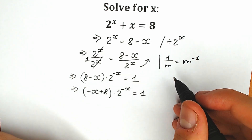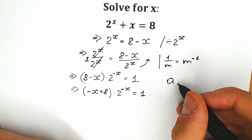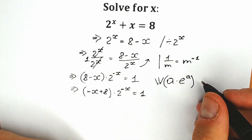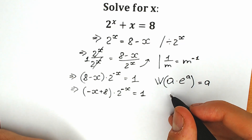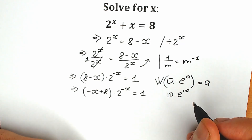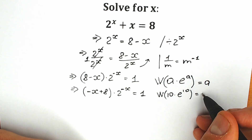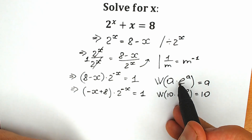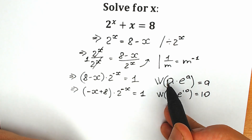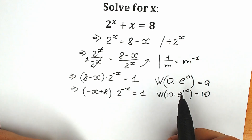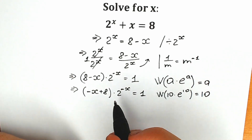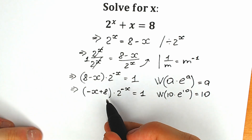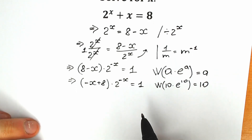We need to know a little about the Lambert W function. Whenever we have an expression of the structure a times e to the power a, when we apply the Lambert W function we get only our a. For example, if we have 10 times e to the power 10 and apply Lambert W, we get only 10. But we need to have e, and we need the same expression both in front of e and in the exponent — right now our expression doesn't have that, so we need to do some manipulation.